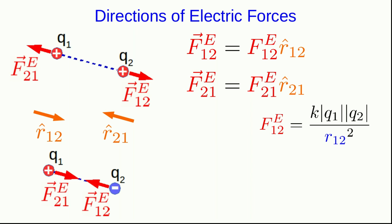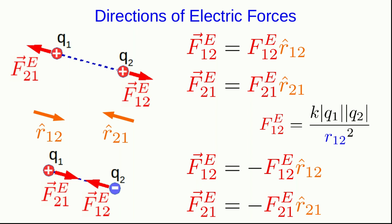Similarly, if these charges have opposite sign, then the forces act the other way. They are attractive. And so now the force that one exerts on two is negative its magnitude times r one two hat. And similarly, the force that two exerts on one is negative r two one hat. Just look at the vectors and you can convince yourself that these relations are correct.